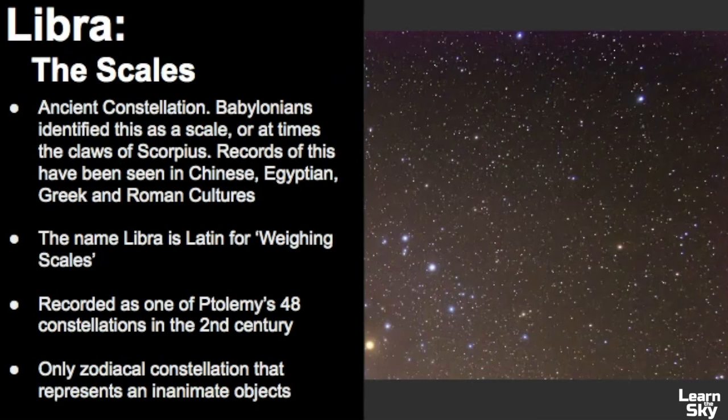So let's get a general overview of this constellation. It's represented as scales, or a balance, and it's a very ancient constellation. The Babylonians identified this as a scale, but it's also been seen in their records as the claws of Scorpius. Records of this constellation have been seen in ancient Chinese, Egyptian, Greek, and Roman cultures. The name Libra is Latin for weighing scales, and it was recorded as one of Ptolemy's 48 constellations in the second century. And this book that Ptolemy wrote was really the authority on the stars for a very long time. And this is the only zodiacal constellation that represents an inanimate object.